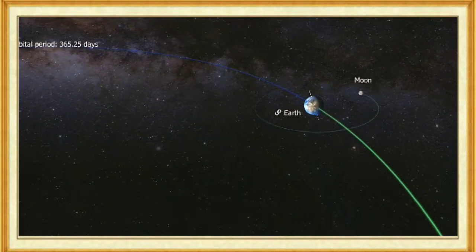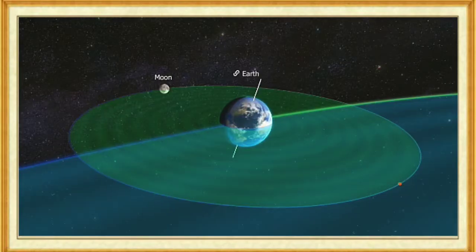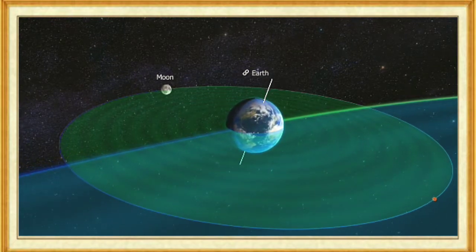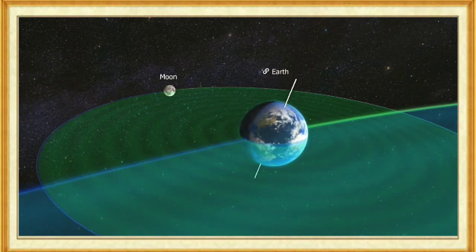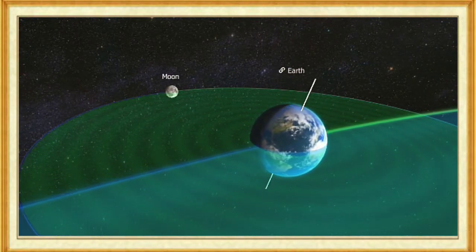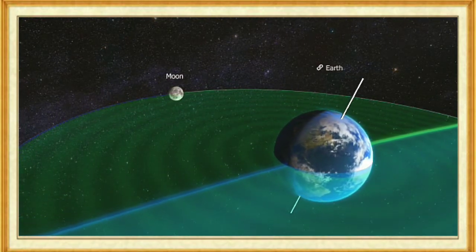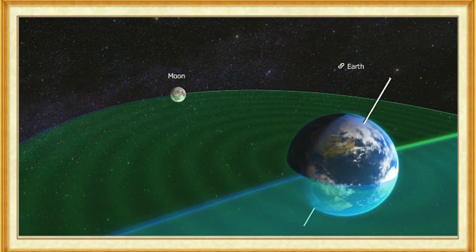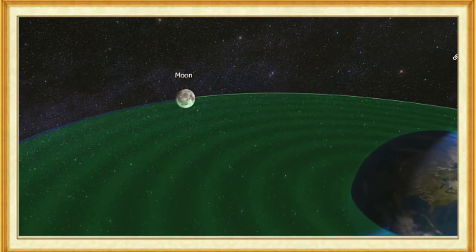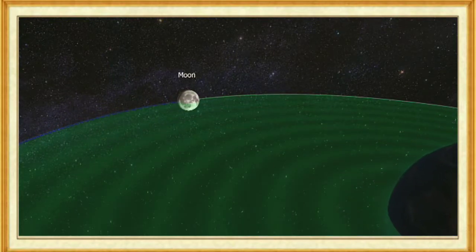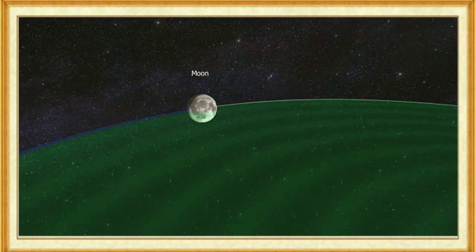Our planet rotates once every 24 hours. The Moon was formed not long after the formation of the planets, as a result of a collision between the young Earth and another ancient planet of about the size of Mars. During the collision, a large amount of material was ejected from the Earth's mantle, which started to orbit the Earth, forming a disk. The material of the disk soon collected into a spherical shape due to gravity, and the Moon was formed.